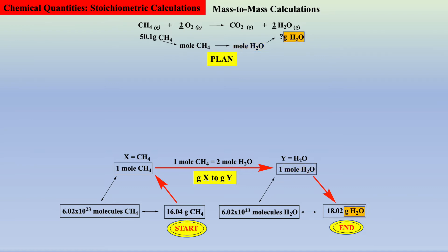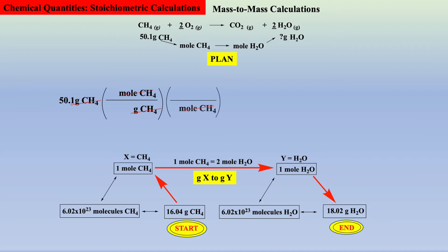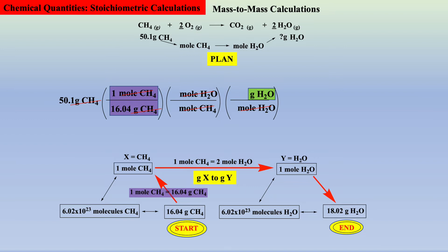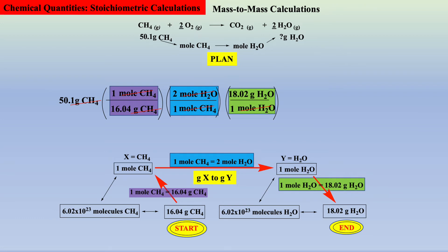To execute this plan, we start with the given quantity, then let the units guide us: grams methane to moles methane, to moles water, to grams water — our desired unit. Now that our units are set, we place the numerical values in, allowing the numerator to equal the denominator. One mole methane equals 16.04 grams methane. Two moles of water will be formed when one mole of methane is combusted. And 18.02 grams water equals one mole water. Doing the math and rounding to correct sig figs yields the final answer: the combustion of 50.1 grams of methane produces 113 grams of water.